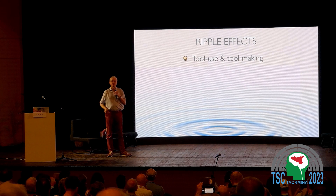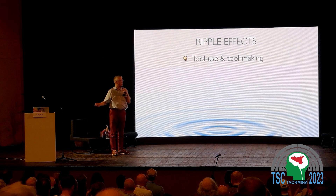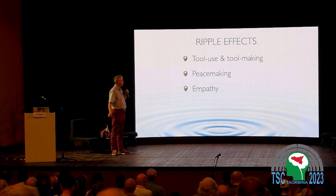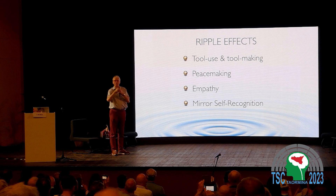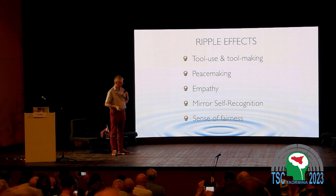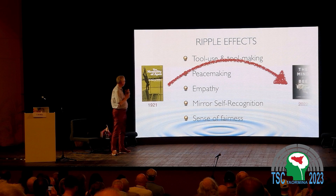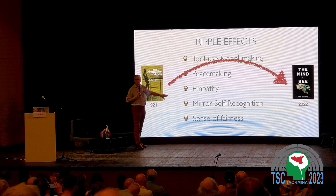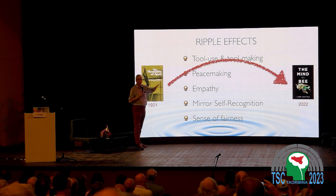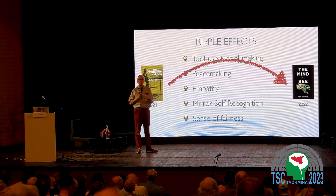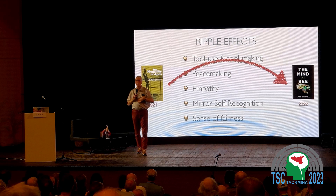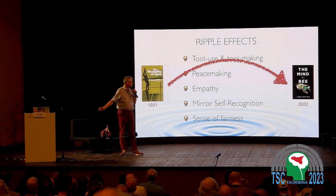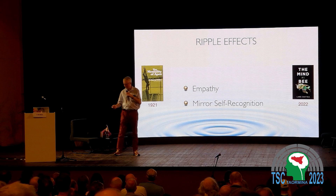Tool use is a typical example — we now have tool use studies in birds and other species, but it started with Köhler's experiments on chimpanzees. We also see it in peacemaking studies, empathy studies, and mirror self-recognition, which is now rippling to other species. We have moved from the Köhler experiments — which first broke the rules of Skinnerian behaviorism — to studies across all sorts of species. I'm going to focus on just two of these: empathy and mirror self-recognition.